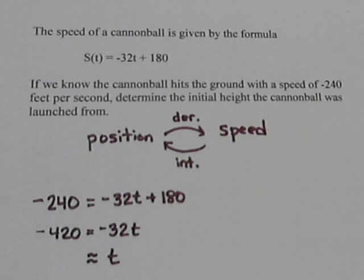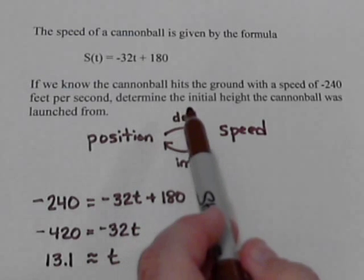And then if we divide both sides by negative 32, we get about 13.1. It's actually 13.125, but we'll just round it off.